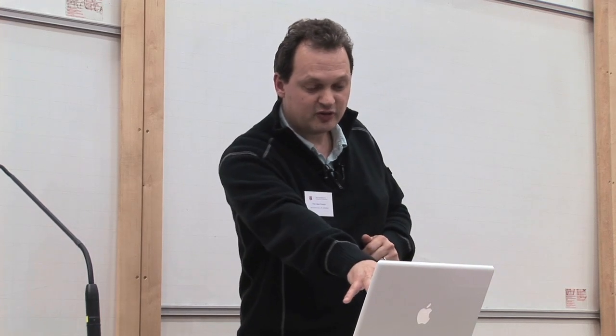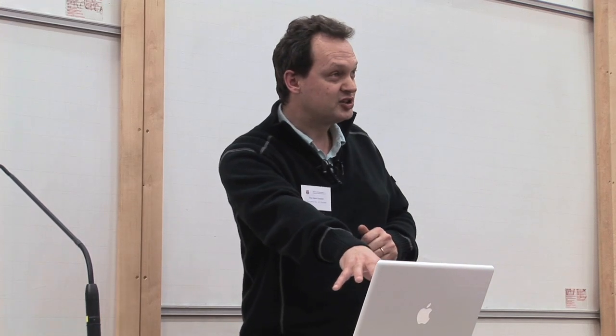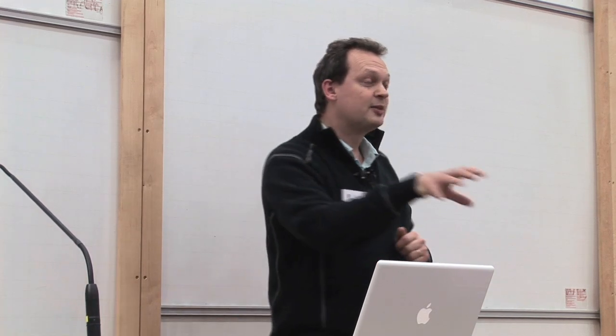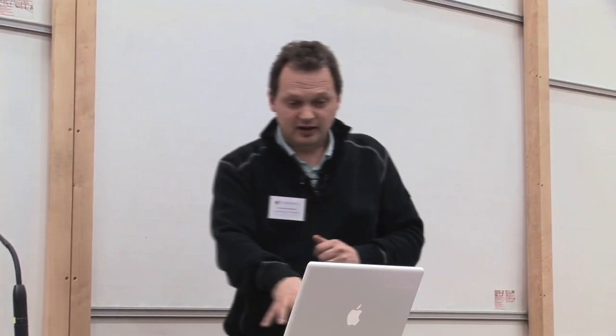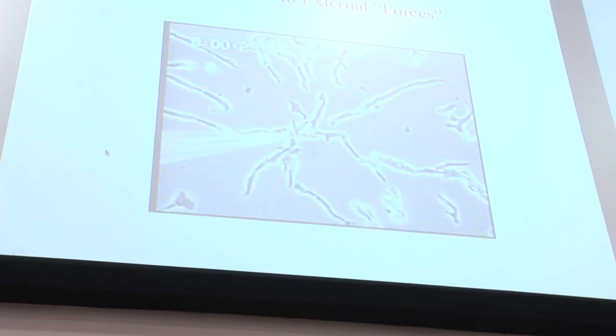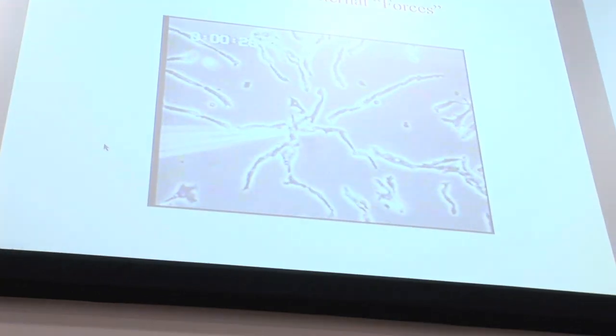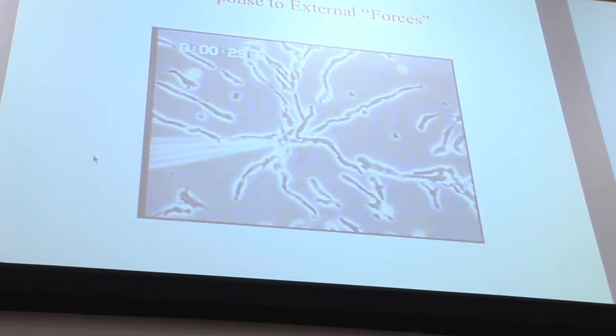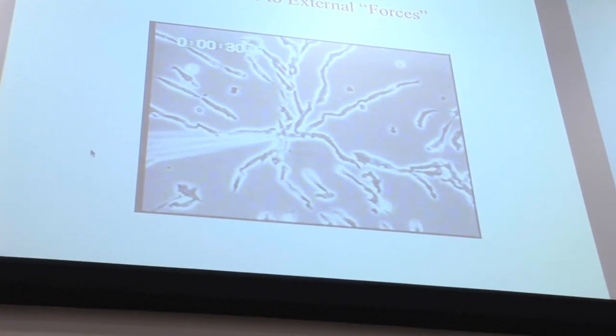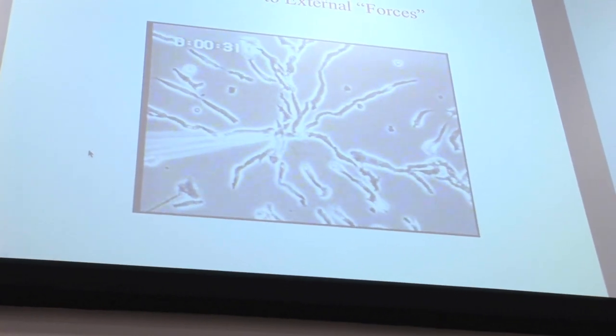And this is a movie of a petri dish. And in the petri dish, there are some amoeba. You'll see there's a little glass thing there — that's a pipette. And some experimentalist is going to squirt some chemical into the petri dish.